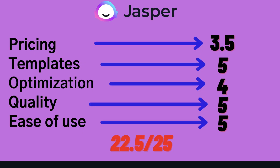Overall, I would give Jasper AI a score of 22.5 out of 25. For pricing, I'd give it a 3.5 out of 5 because the monthly plans can be a little expensive and you don't get a lot of monthly AI credits compared to Scalenut. For templates, I'd give them a 5 — they have some really good templates. For optimization, I'd give them a 4, as it would be nice if they had their own built-in tools rather than just connecting to Surfer SEO. For quality, I'd give them a 5. And for ease of use, also a 5. So that's 22.5 out of 25 for Jasper AI.